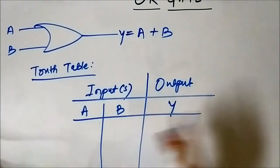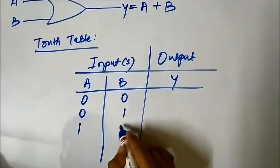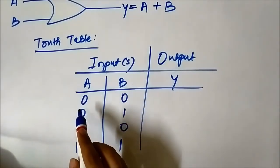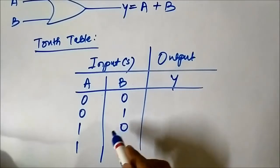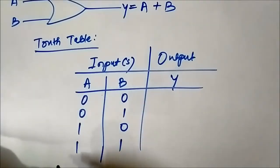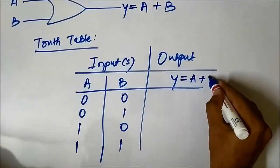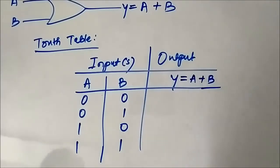As there are two inputs, there can be four input combinations: 00, 01, 10, 11 — that is both inputs A and B at logic low; A low and B high; A high and B low; and both inputs at logic high. The output is the addition of the two input logic levels, that is A OR B, or A plus B. The OR gate obeys the binary addition rules.